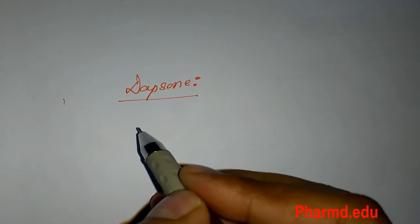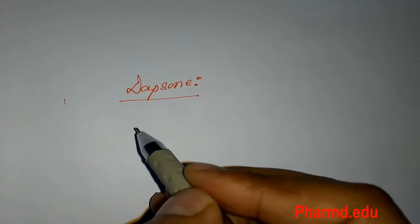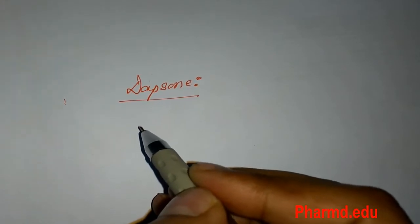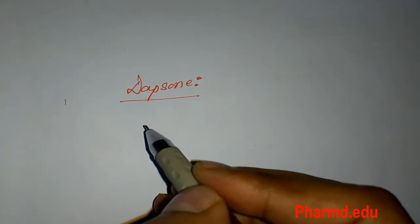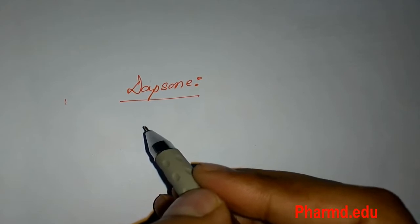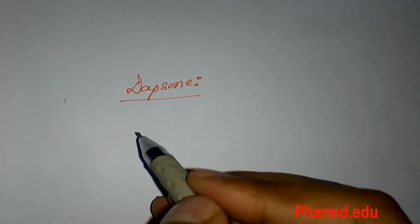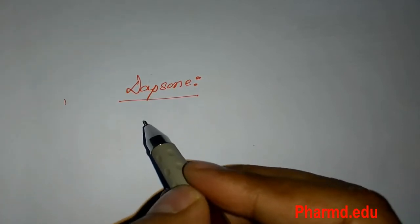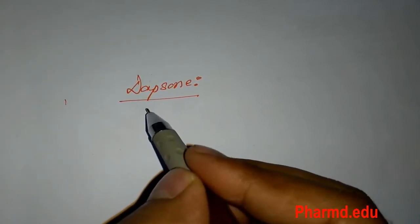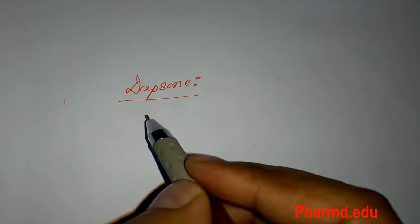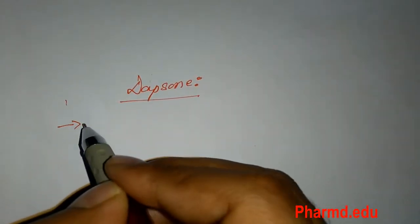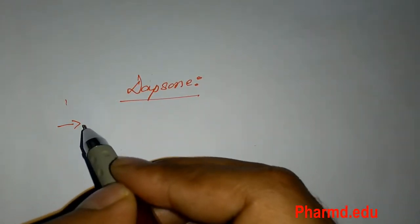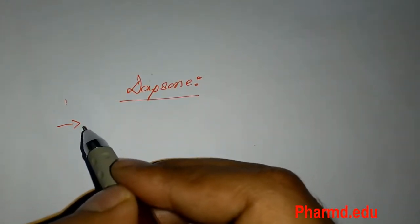Dapsone is a drug under the classification of sulfonamides. It is a folate-reductase inhibitor, and it comes under the classification of sulfonamides.